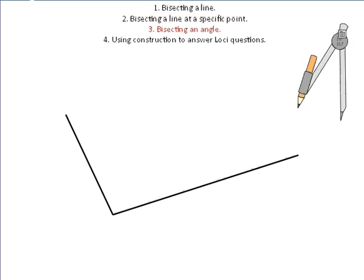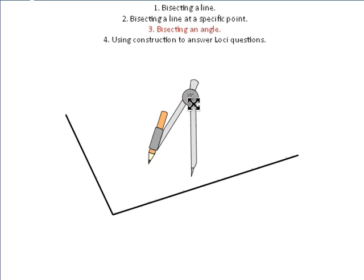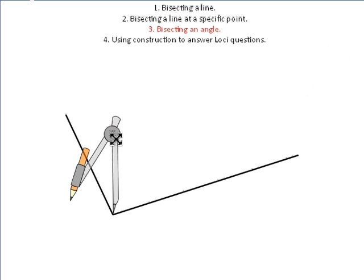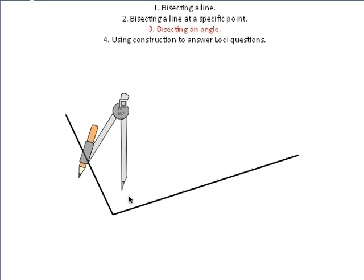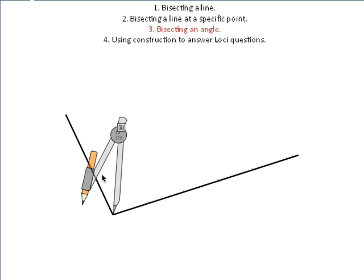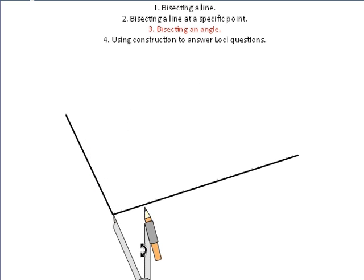The next thing is bisecting an angle. Again, we're going to cut this angle in half — we're going to end up with a line approximately here, so that both these angles are the same size. The only difference is that we need three arcs this time, three curved lines. You must remember that the point goes right in the corner, but it doesn't really matter how wide your compass is this time. I'm going to open mine to something like that.